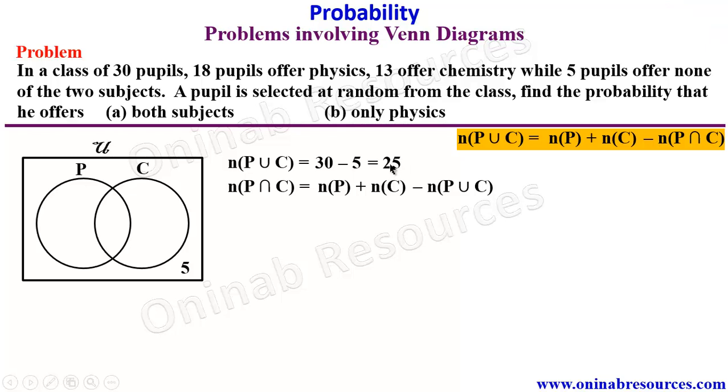We've gotten N of P union C to be 25, N of P to be 18, and N of C to be 13. So we substitute, that's going to give us 18 plus 13 minus 25. This is 31 minus 25 giving us 6, which means the intersection here is 6.